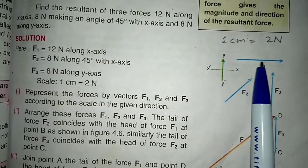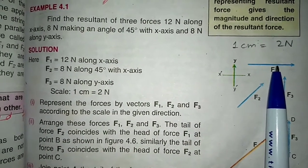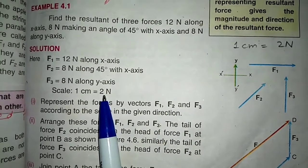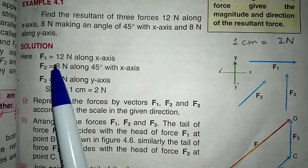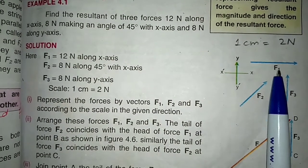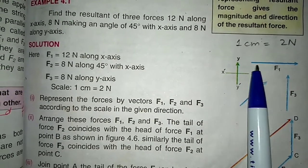Students, like we have done scale, 1 cm equals 2 newton. It means that 12 newton will be 6 cm. So, we have drawn F1 along the x-axis.